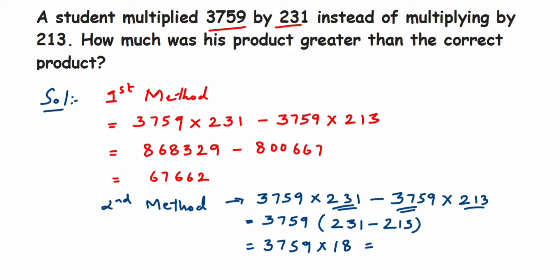And when you multiply these two numbers, you get the same answer which is 67662. So this is a much easier way of solving instead of the first method, which is quite lengthy and time-consuming. I hope it's clear. In case you have any questions or doubts, you can drop a comment below. Thank you so much for watching.